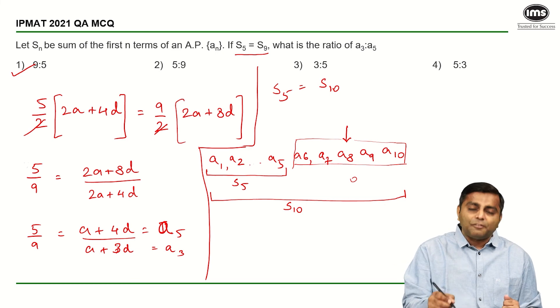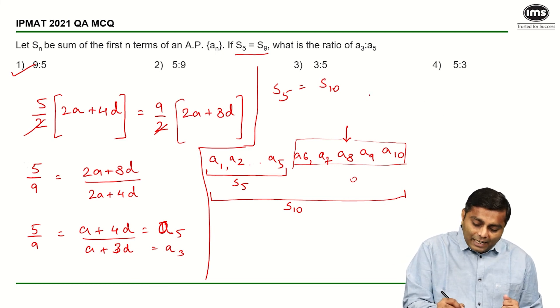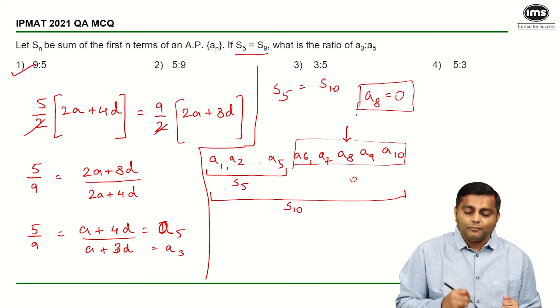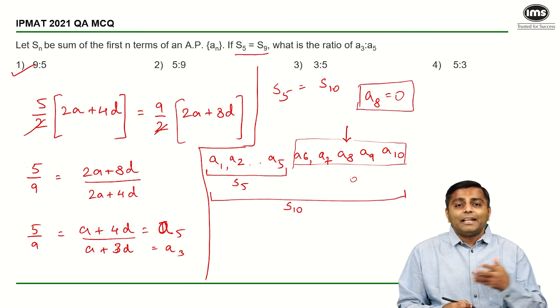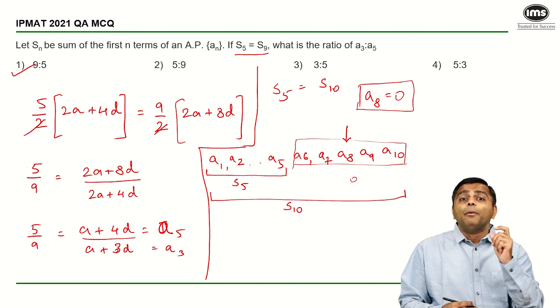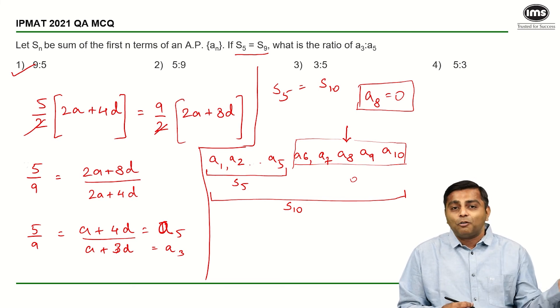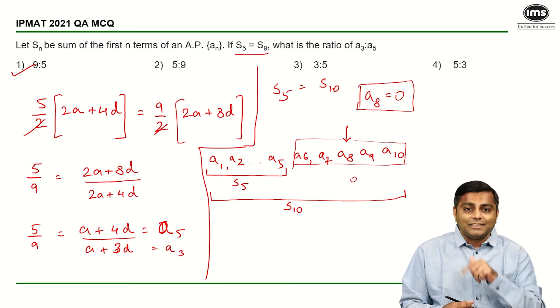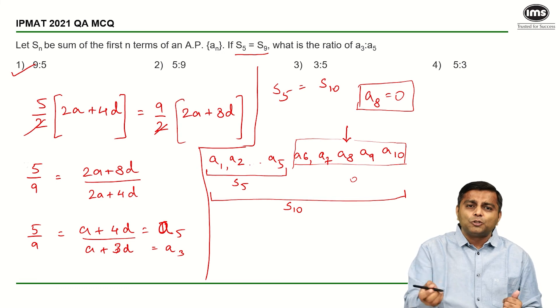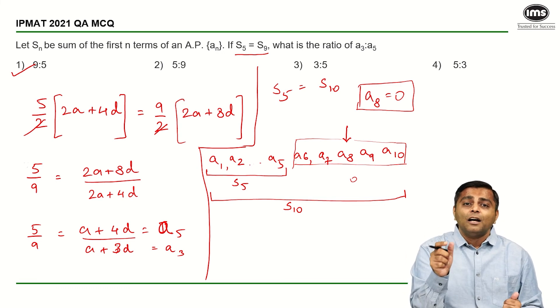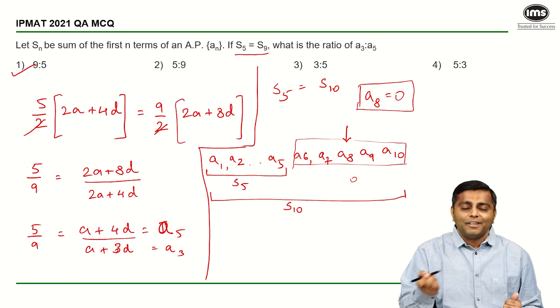Hence, the middle term here definitely has to be 0. If the middle term is not 0, you will never get the sum as 0. So had they given us S₅, S₁₀, we would have said that A₈ is definitely 0. Remember that anyway, whenever the numbers are in AP, the middle term is always the arithmetic mean of the entire series. So by that simple term also, the middle term of that series has to be 0 if the sum is 0.